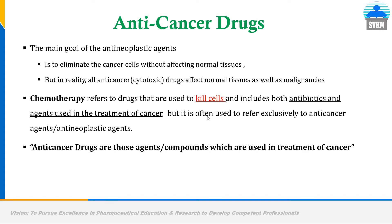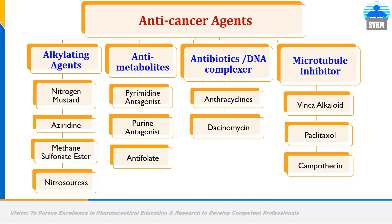Let's try to understand the classification of anti-cancer drugs. Anti-cancer drugs are broadly classified into four classes: the first class is alkylating agents; the second class includes anti-metabolites; the third class includes antibiotic and DNA complexer drugs; and the fourth class includes microtubule inhibitor drugs. In this video, I am going to explain alkylating drugs as anti-cancer molecules, covering nitrogen mustard, aziridine, methane sulfonate ester, and nitrosoureas.